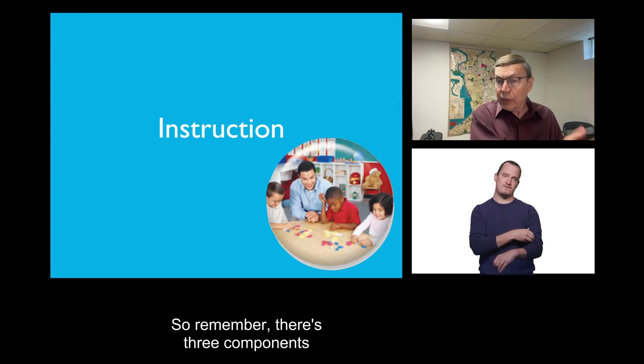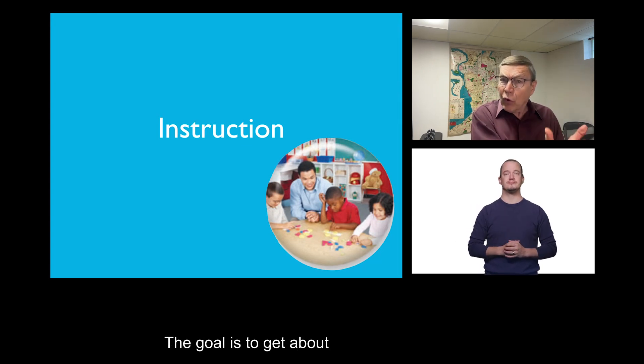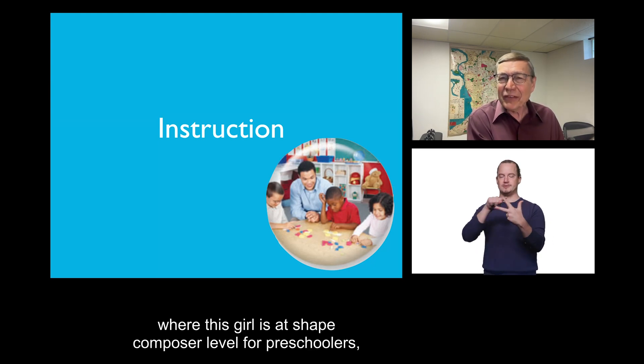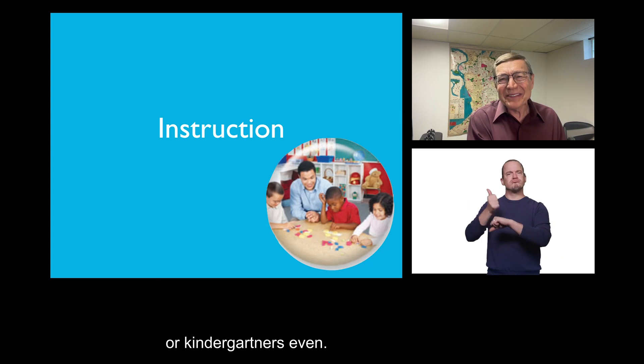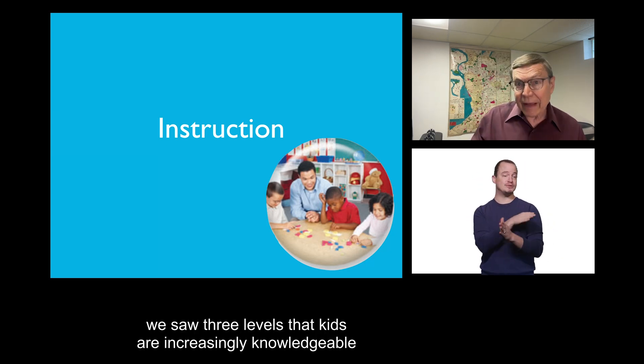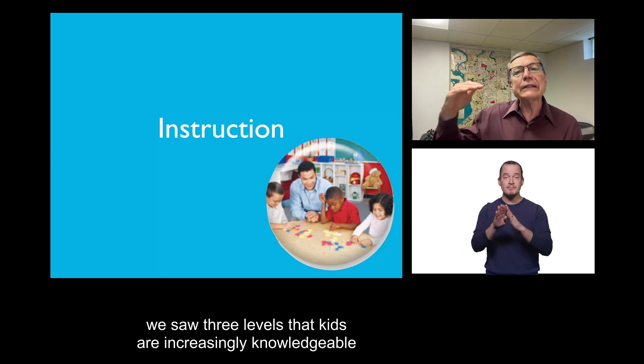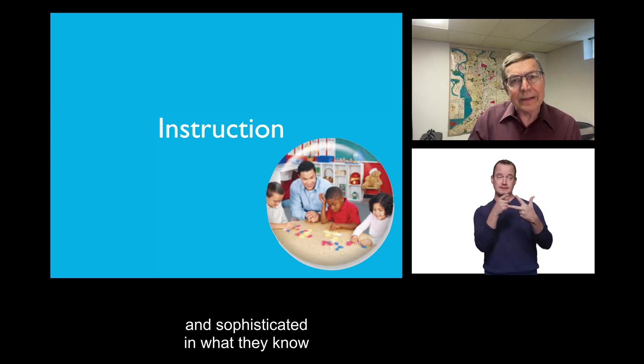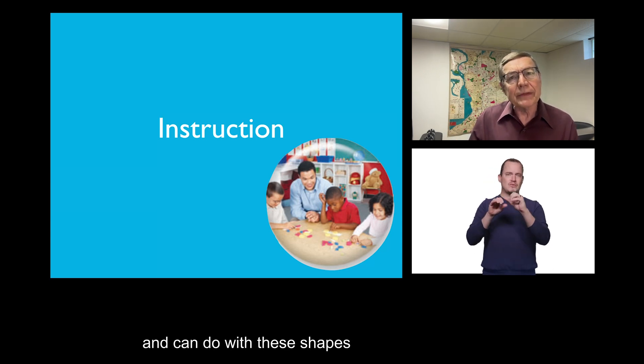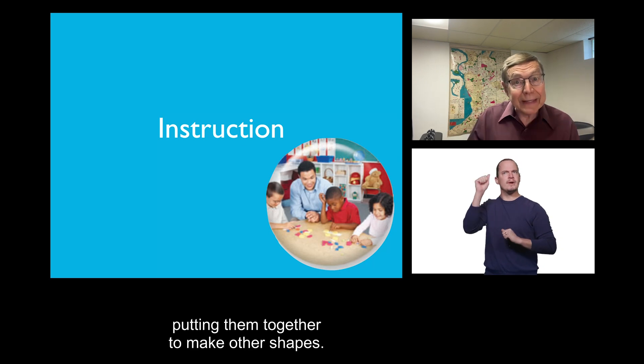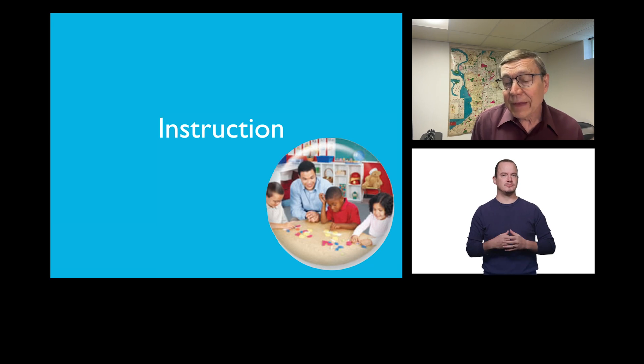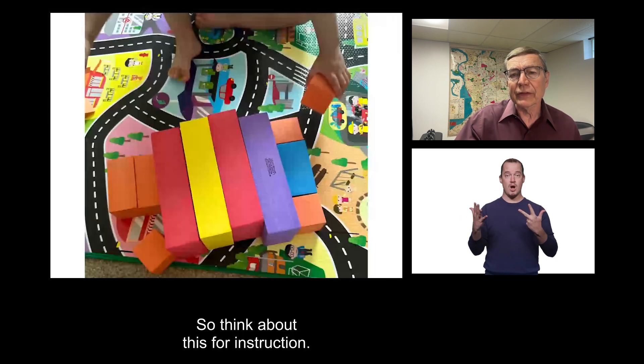So, remember, there's three components to a learning trajectory. The goal is to get about where this girl is at shape composer level for preschoolers or kindergartners even. The development of progression, we saw three levels, that kids are increasingly knowledgeable and sophisticated in what they know and can do with these shapes and composing them, putting them together to make other shapes. And the third thing is instruction.